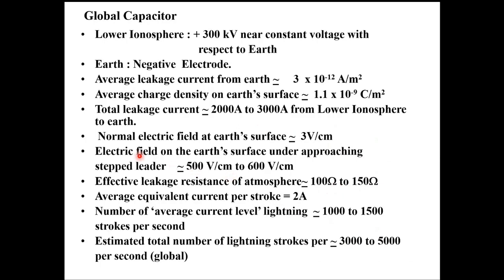What is the electric field at Earth's surface? With the lower ionosphere at around 300 kV, the electric field at Earth's surface is typically about 3 volts per centimetre — that means 300 volts per metre. If you think of a person approximately 1.5 metres tall, there will be approximately 450 volts from head to foot. But the person does not sense any electrical shock because the current is very, very small — 3 picoamperes per square metre — and the human body acts as a near-short circuit.